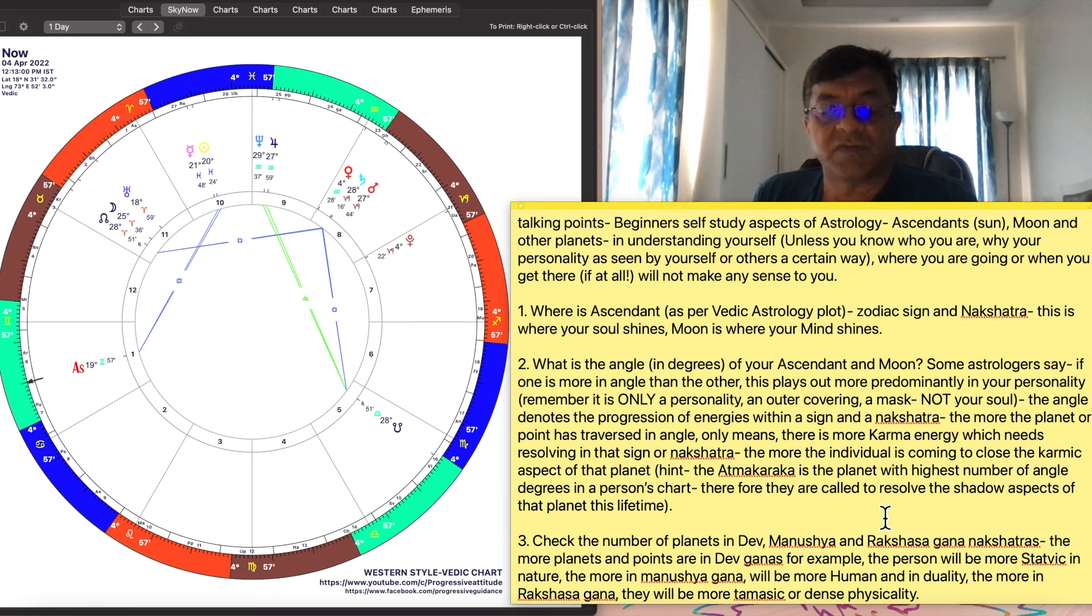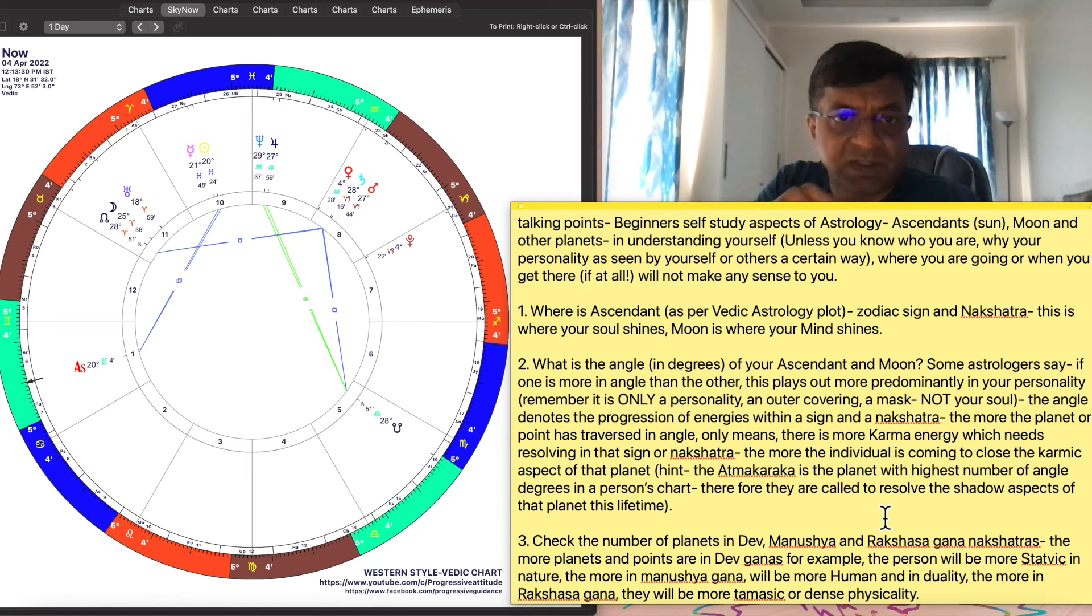These things are useful for you to know for understanding self, the personality - self as the personality, not self as the soul, although there are indications to that effect. First we'll study the ascendant. First point to look at for you will be the ascendant and I will compare it to the chart now. It's 4th of April 2022, 12:13 PM Indian standard time. This is the Western style Vedic astrology plot of the current time right now. The blue signs are all water, the red signs are all fire, the brown ones are earth and green ones are air signs with the respective nakshatra shown in there.